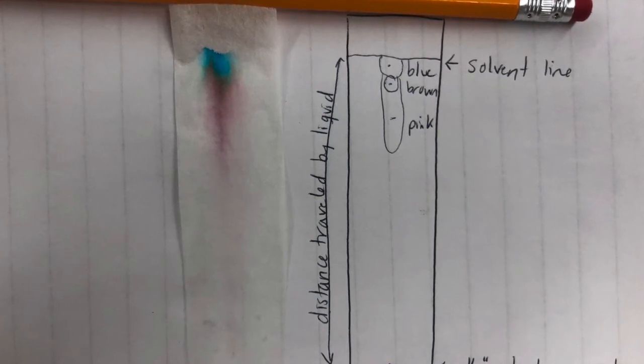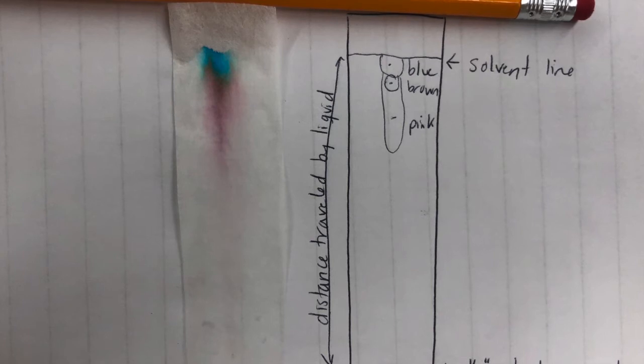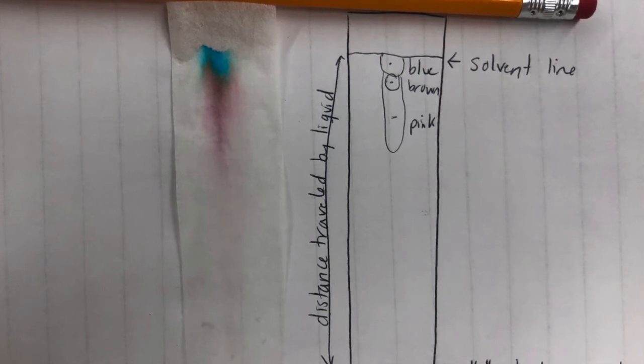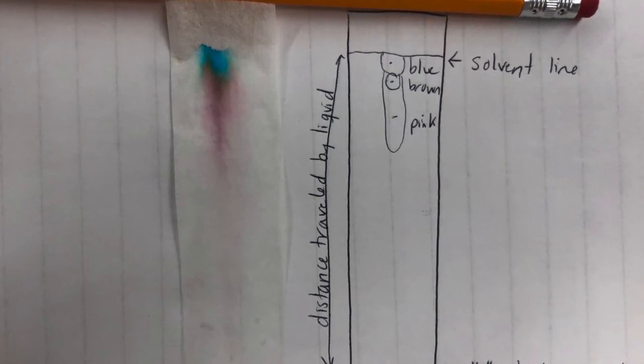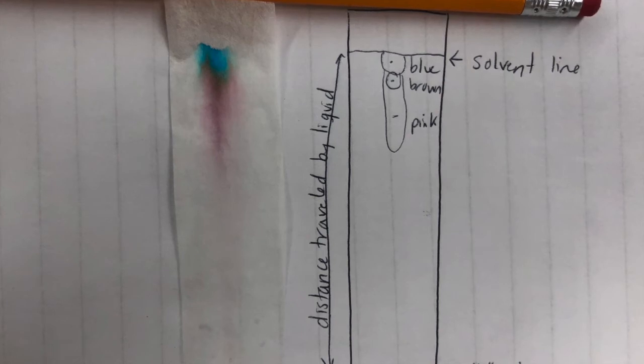I can then calculate an RF value for each of those things by doing the distance from my half inch starting point up to the center of the dot and then dividing that by the total distance that the liquid traveled. So the denominator will be the same for all of them.